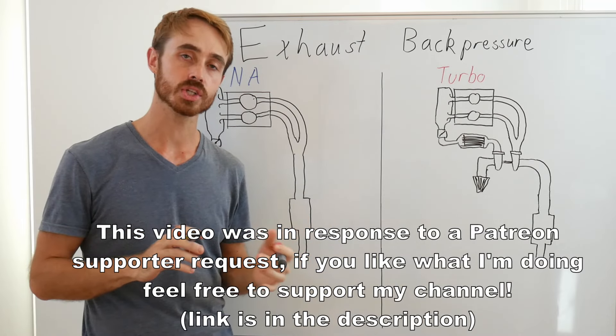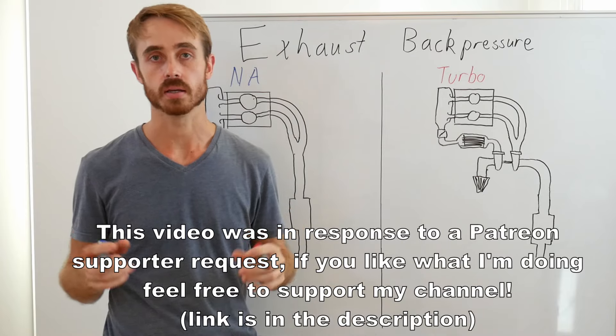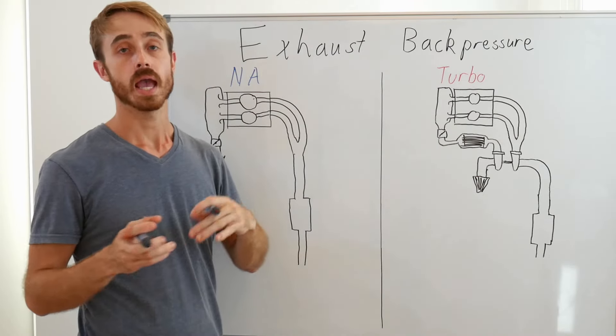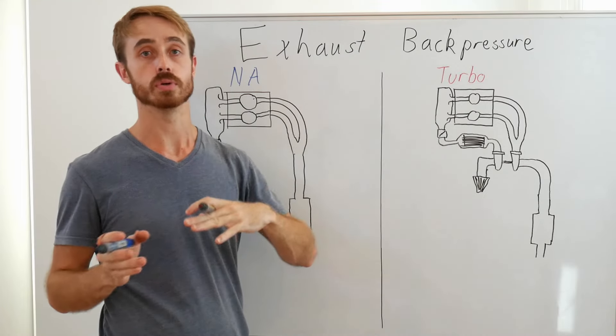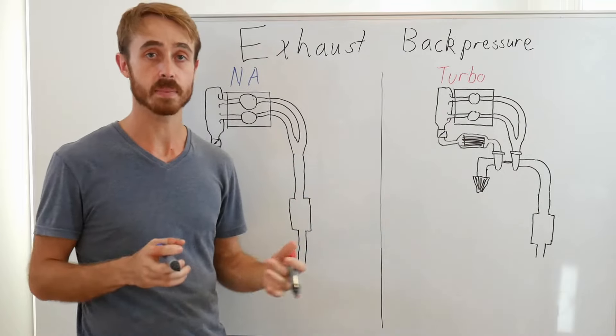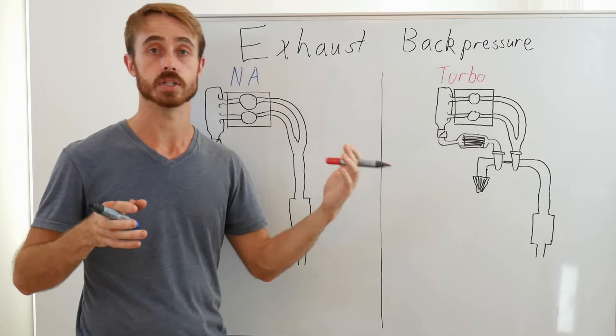Today we're going to be talking about exhaust back pressure and the basics of what is known as engine scavenging. Now the concept of exhaust back pressure itself is fairly intuitive. If you're applying something in the exhaust that puts a resistance in the flow of the exhaust and back on the engine, that is providing back pressure. So say we put on a more restrictive muffler, we're increasing the back pressure at the engine.